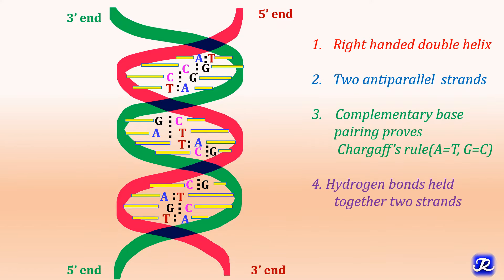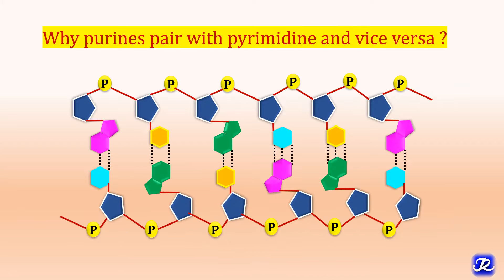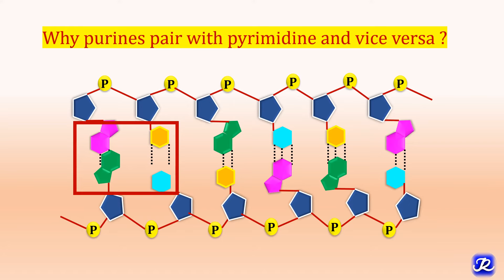Two strands are held together by hydrogen bonds which develop between purine and pyrimidine bases of opposite strands. Adenine always bonds with thymine by two hydrogen bonds and guanine always bonds with cytosine by three hydrogen bonds. Purines pair with pyrimidines because the space in the core of the DNA molecule is just sufficient to allow a purine-pyrimidine pair. Additionally, steric hindrance by the anti-configuration of N-glycosidic bonds favors only A-T and G-C pairing. If purines paired with purines they would not fit the available space, and if two pyrimidines formed a pair they would be too far apart to form hydrogen bonds.